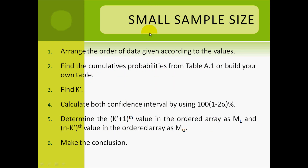The following steps apply for small sample size. First, arrange the data in ascending order. Next, find the cumulative probabilities from table A.1 or build your own table. Then find the value of k'. Calculate both confidence intervals using the formula. Determine the k' plus 1 value in the order array as ML, the lower limit, and the n minus k value in the order array as MU. Finally, make your conclusion.